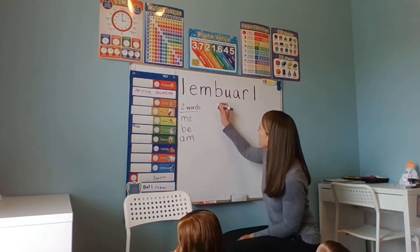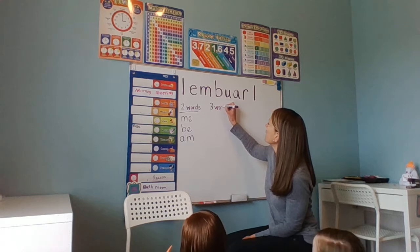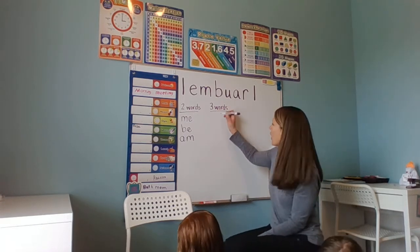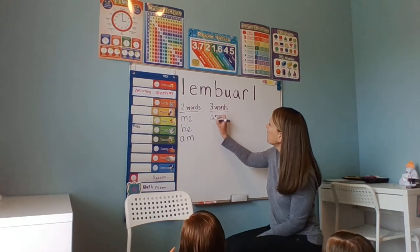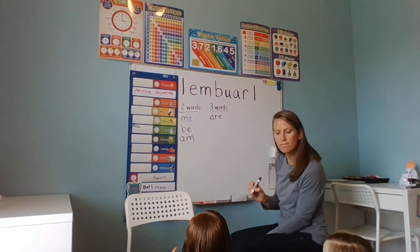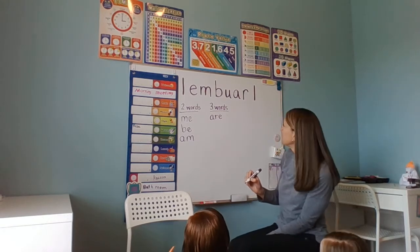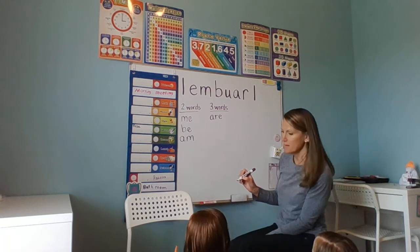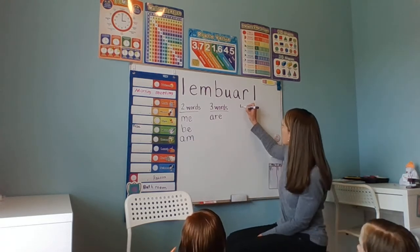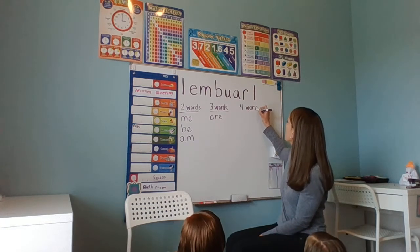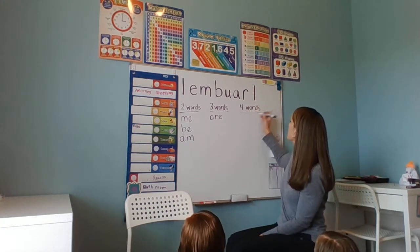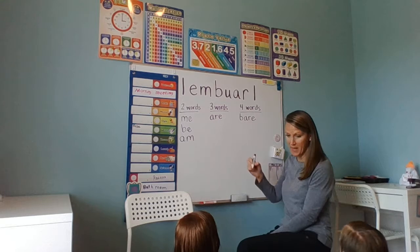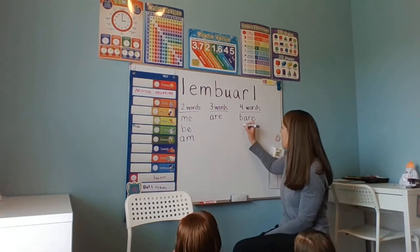How about three-letter words? Someone found 'bear' — like bare feet. That's four letters: B-E-A-R, which also means teddy bear or bear in the woods. Let's go back to three-letter words: 'rub' — R-U-B, and then 'bar' — like lift yourself up on the bar, or a candy bar.